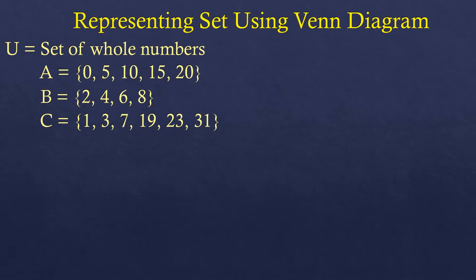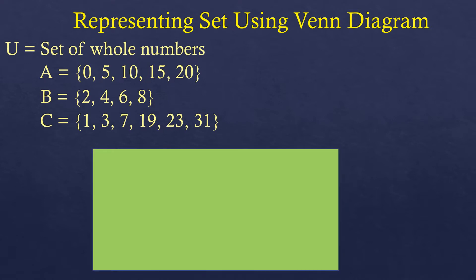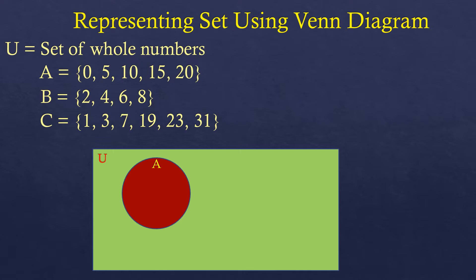Now I'm going to show you how to create a Venn diagram from these sets. First, we create a rectangle that represents the universal set. Imagine this rectangle is filled with all whole numbers — I didn't put any numbers there because there are infinitely many, and it's hard to put them all inside a small rectangle. Then we create a circle representing set A, and put its elements — 0, 5, 10, 15, 20 — inside. Since it's inside the rectangle, it's also part of the universal set.